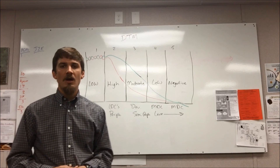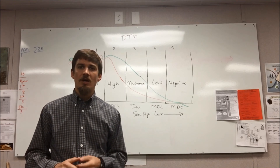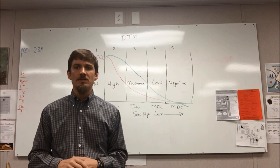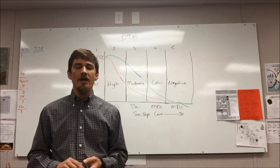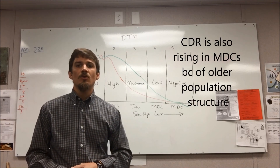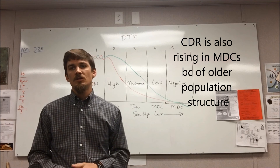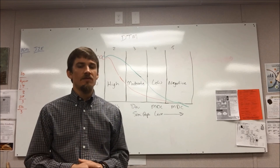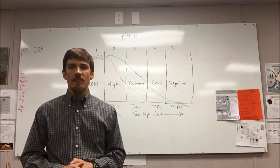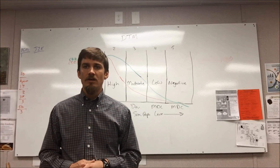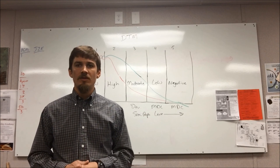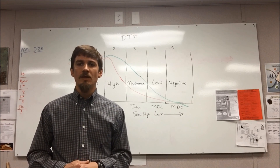Stage five is still being debated among population experts — some say yes, some say no. They look specifically to places like Japan and Germany as countries actually entering negative population growth, and the question is whether that trend will continue. So there you have it — that is the demographic transition model in a nutshell, just a very brief review. I hope you found that helpful, and I'd like to see you next time.